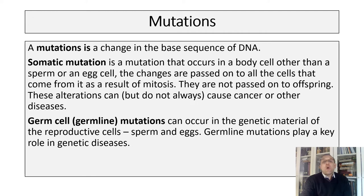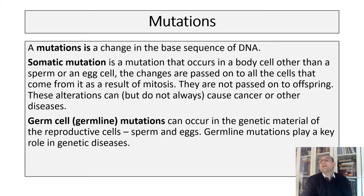Mutations are caused by mutagens — substances or conditions that cause an error in replication of genetic material. Some chemicals are mutagens. Radiation is also a mutagen. Sometimes viruses can cause mutations. In some cases even increasing temperature can produce mutations, and sometimes mutations happen simply because mistakes happen. No one is perfect and nothing is perfect.